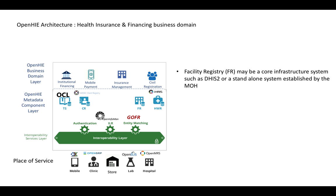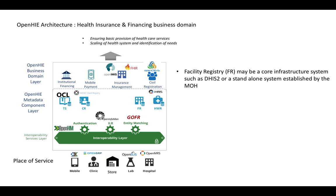The final business domain we're going to look at is the health insurance and financing business domain. On top of the core OpenHIE metadata layer, we build a business domain layer that may consist of an institutional financing system, mobile payment system, insurance management system, and civil registration system. There are existing open source tools such as OpenIMIS combined with a FHIR server for insurance management, and OpenCRVS for civil registration. The main business domain needs are to ensure that basic provision of healthcare services is provided to all citizens, and to ensure we can scale the health system and identify additional needs for coverage.